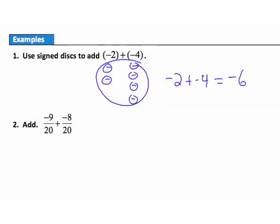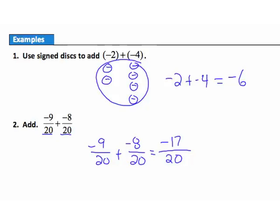Example 2: add negative 9 twentieths plus negative 8 twentieths. We're adding fractions, and we remember that when we add fractions the denominators need to match — they do, both have a denominator of 20, and the denominator stays the same. So: negative 9 twentieths plus negative 8 twentieths. The denominator stays 20. For the numerators, 9 negatives plus 8 more negatives gives 17 negatives. So the answer is negative 17 twentieths.